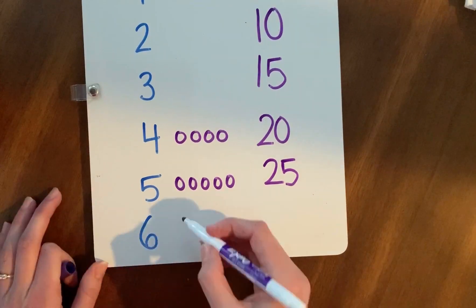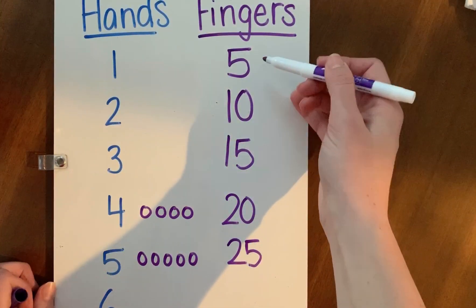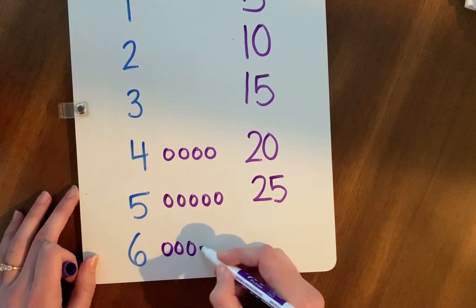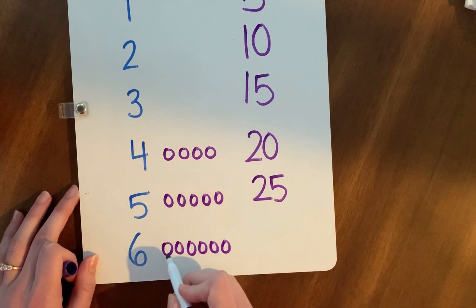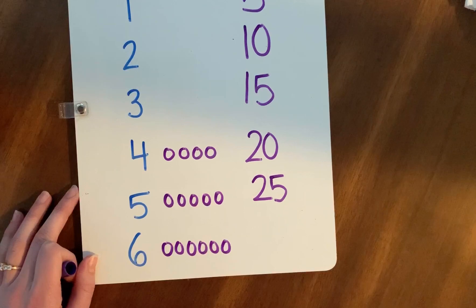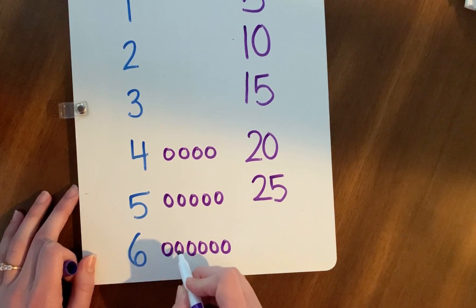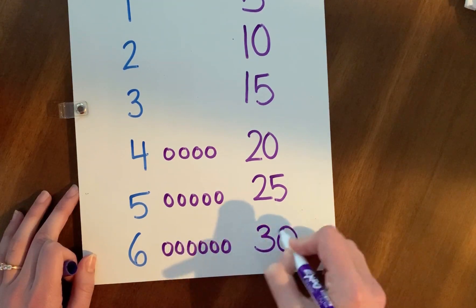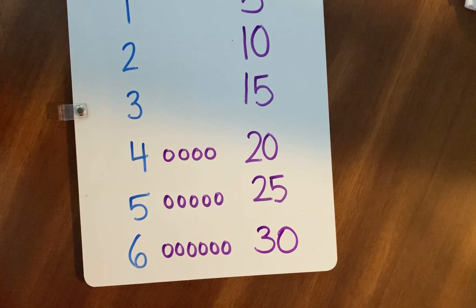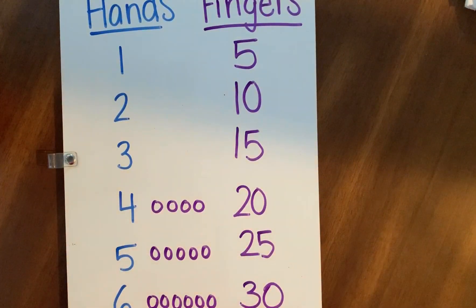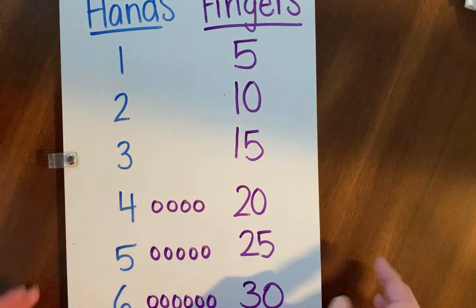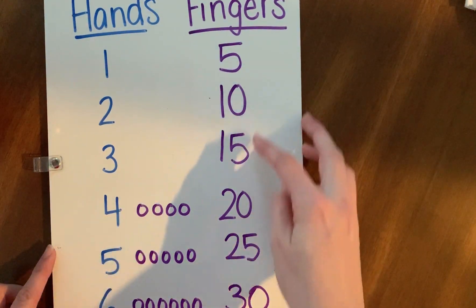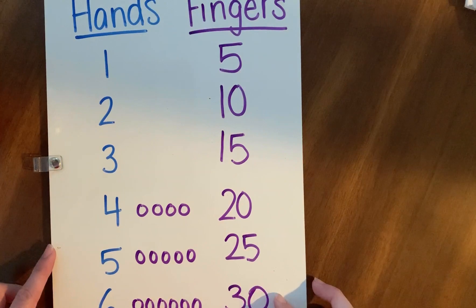What about six? We can follow this pattern, or we can draw another picture — make a prediction. Six hands: five, 10, 15, 20, 25, 30 fingers. Let's look at this chart. What do you notice? Our hands are going down from one to six, and our fingers are skip counting by fives: five, 10, 15, 20, 25, 30.